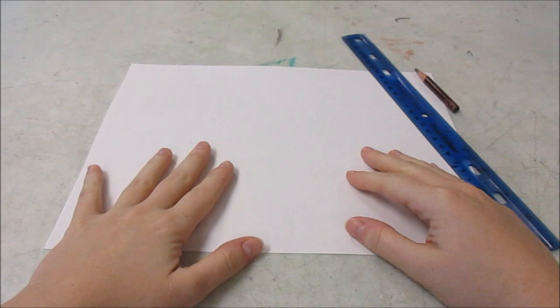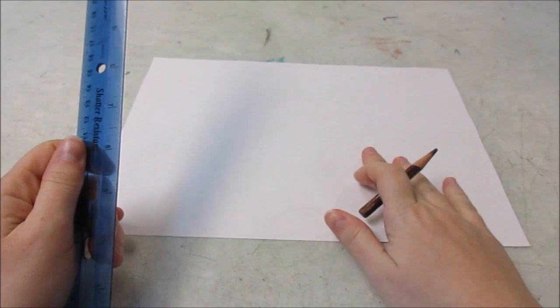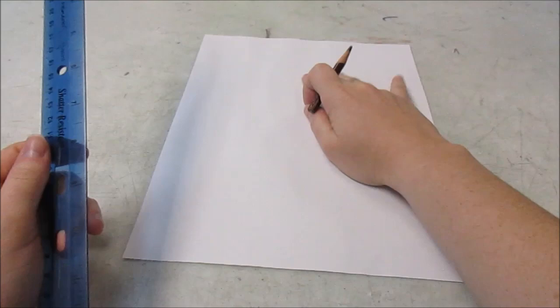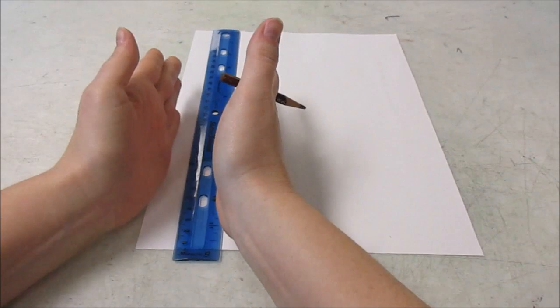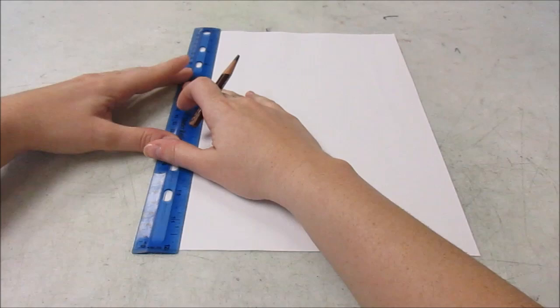So if you have a ruler, it's pretty simple to do. First thing we're going to do is turn it so that it is vertical, up and down, and make stripes. We don't really have to measure them. The way we're going to measure them is by using the width of the ruler. So you're going to line the ruler up at the edge of the paper, and then make a straight line.